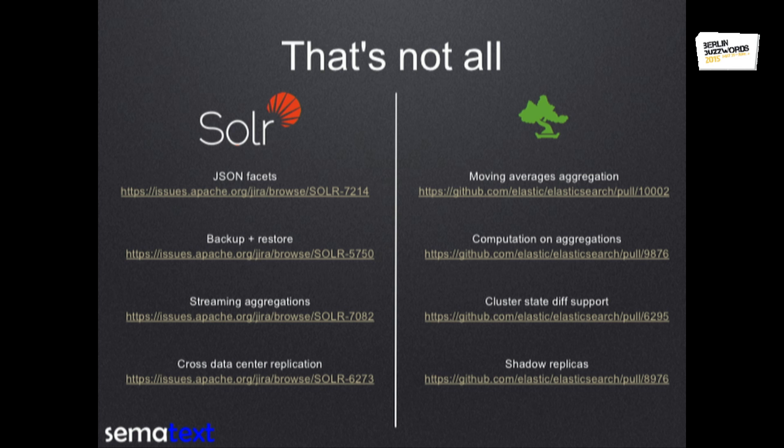We will have cluster diffing support to more easily handle use cases with a large number of shards in your cluster. Shadow replicas are already here, which means you can reuse the binary copy of the Lucene index instead of using the transaction log and re-indexing on each replica. On the Solr side, starting from 5.1 we have JSON facets. In 5.2 we have backup and restore functionality with the replication handler, the streaming aggregations for very fast data processing, and cross data center replication coming in 5.3.